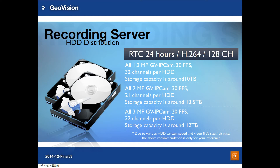Here we use different resolution cameras to show hard disk space usage and how many channels you can record per hard drive, recording 24 hours RTC using H.264 codec at 128 channels max. For 1.3 megapixel cameras at 30 frames, you can record 32 channels per hard drive using about 13.5 terabytes per day. For 2 megapixel cameras at 30 frames, 21 channels per hard drive at around 13.5 terabytes per day. For 3 megapixel cameras at 20 frames, 32 channels per hard drive at around 12 terabytes per day.